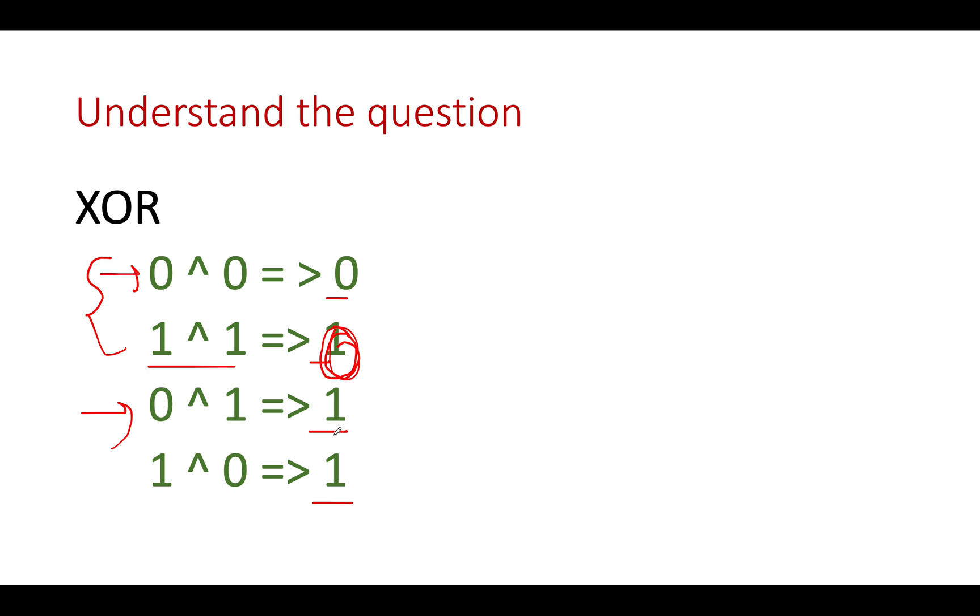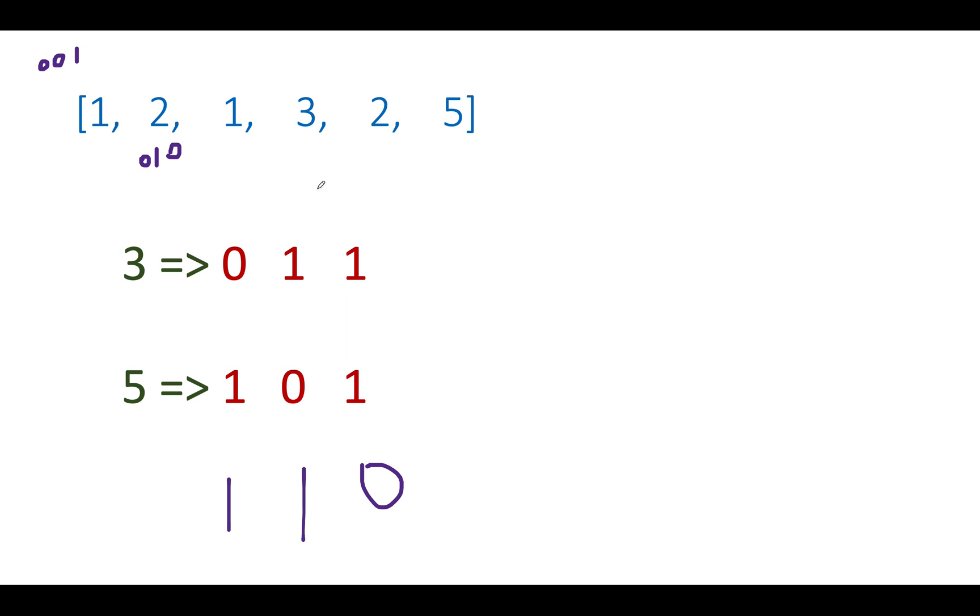Now let's look at the same example that was specified in the question. The question says we are given an input array 1, 2, 1, 3, 2, 5. And we need to identify those elements that appear only once. What are those elements? The first element is three and the second element is five.